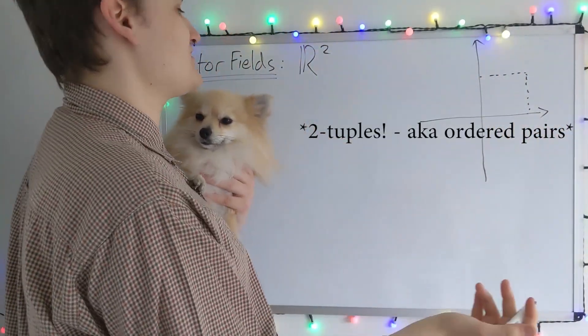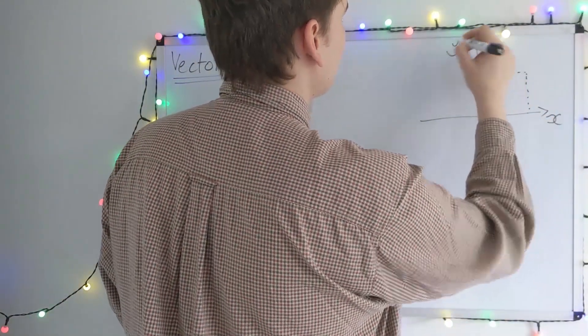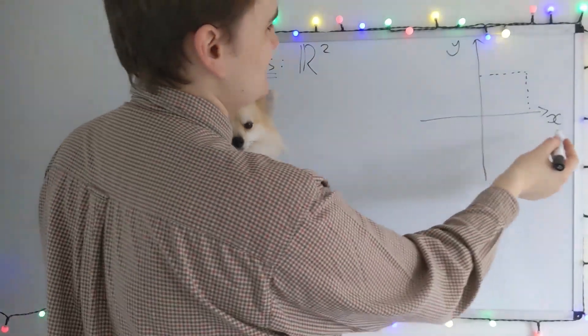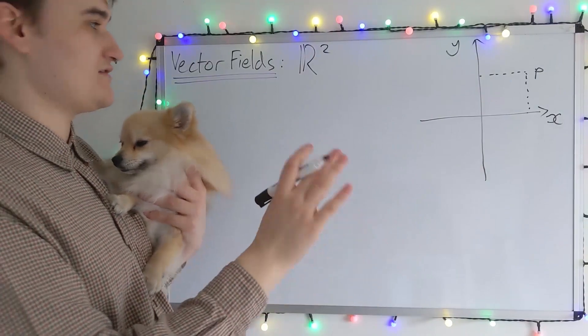And then we usually like to use the trivial chart, which is just essentially assigning each point its coordinates. So we just talk about the x and y coordinates of a point now. So that's a perfectly valid chart for R².